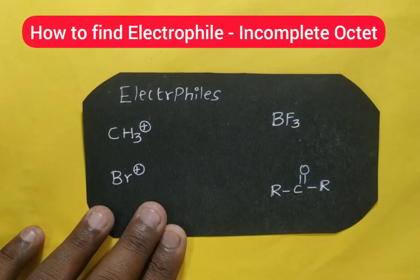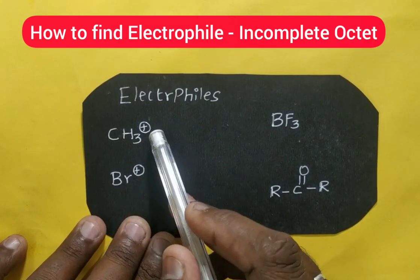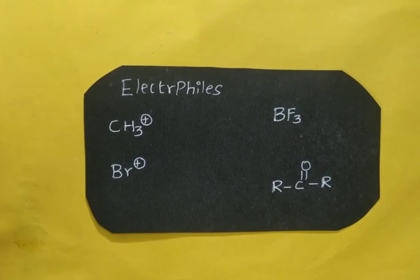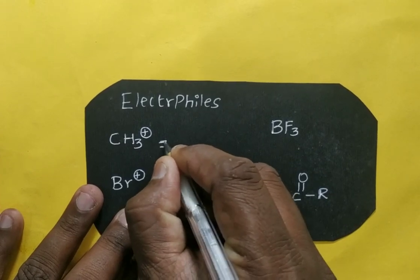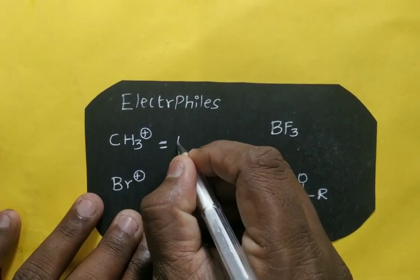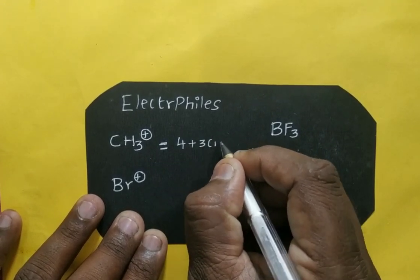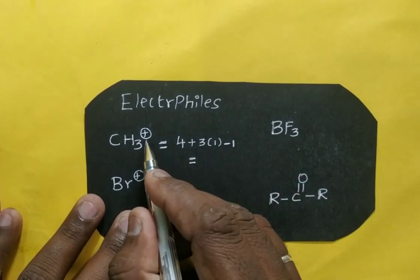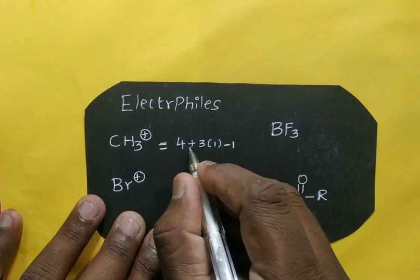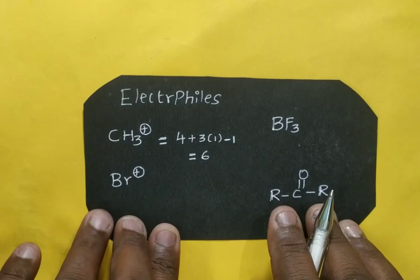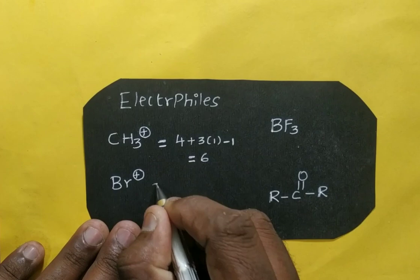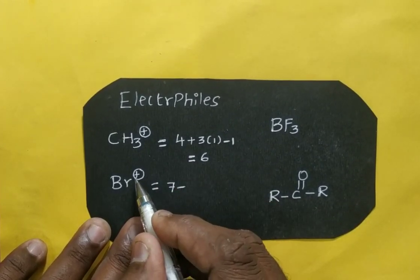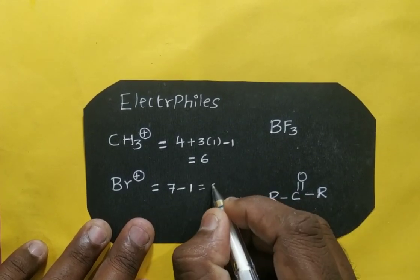Now for electrophiles. Take CH₃⁺: valence of carbon is 4, with 3 hydrogens each contributing 1, giving 7. But with a positive charge, 1 electron is removed, so we subtract 1: total is 6. This does not follow the octet configuration — it is an incomplete octet. Similarly, Br⁺ has 7 valence electrons, minus 1 for the positive charge equals 6. Also an incomplete octet, making it an electrophile.